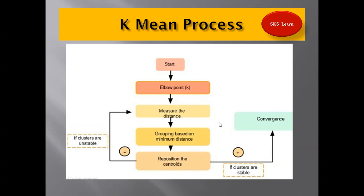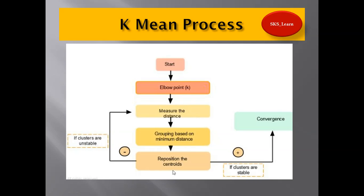This is the K-means process: I will start, do an elbow point — which we will learn later — and measure the distance from the center point. Data groups itself for the minimum distance onto the center point. Then I reposition the centroid. I keep doing repositioning until the measured distance gets minimized and I get quality clusters — a quality segment of that data. When there are no more chances to minimize the distance, the cluster is found and convergence starts.